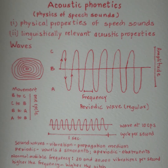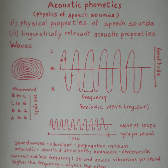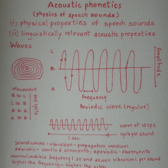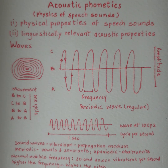There are two important characteristics of waves that are also important in acoustic phonetics. First is frequency — how close two waves are together. And second is amplitude — the maximum distance the wave moves from the starting point. In the figure, the movement from point B to C, back to B, then to A, and back to B is one cycle.